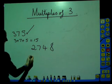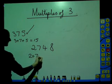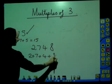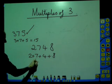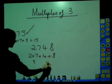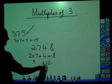2748. Add the digits. 2 plus 7 plus 4 plus 8. 2 plus 7 is 9. 4 and 8 is 12. Add those together. You get 21.